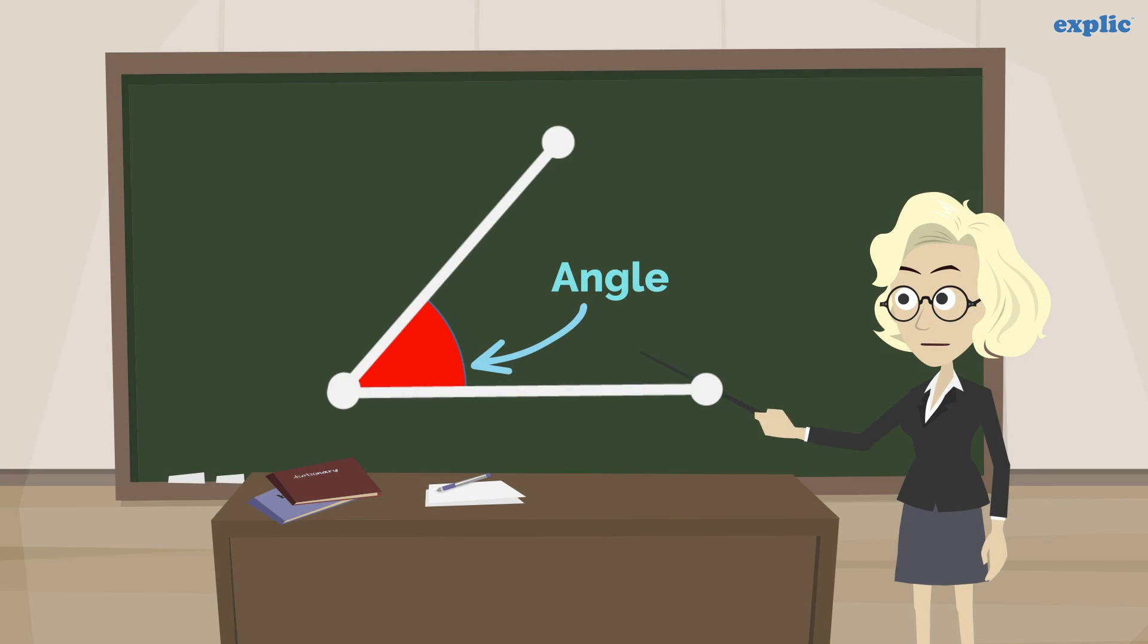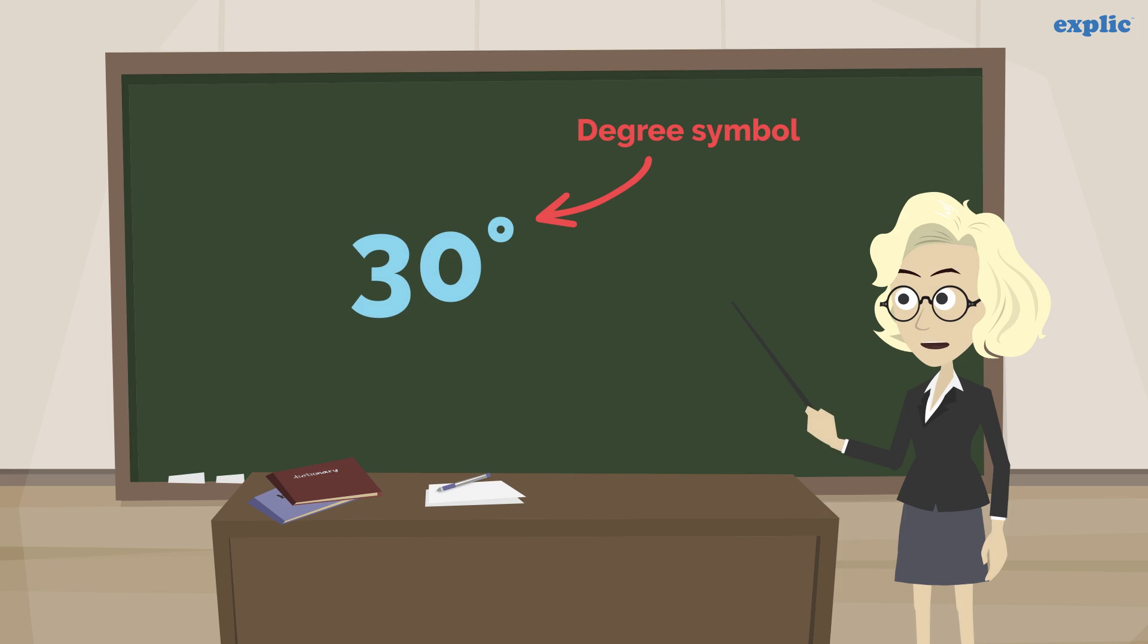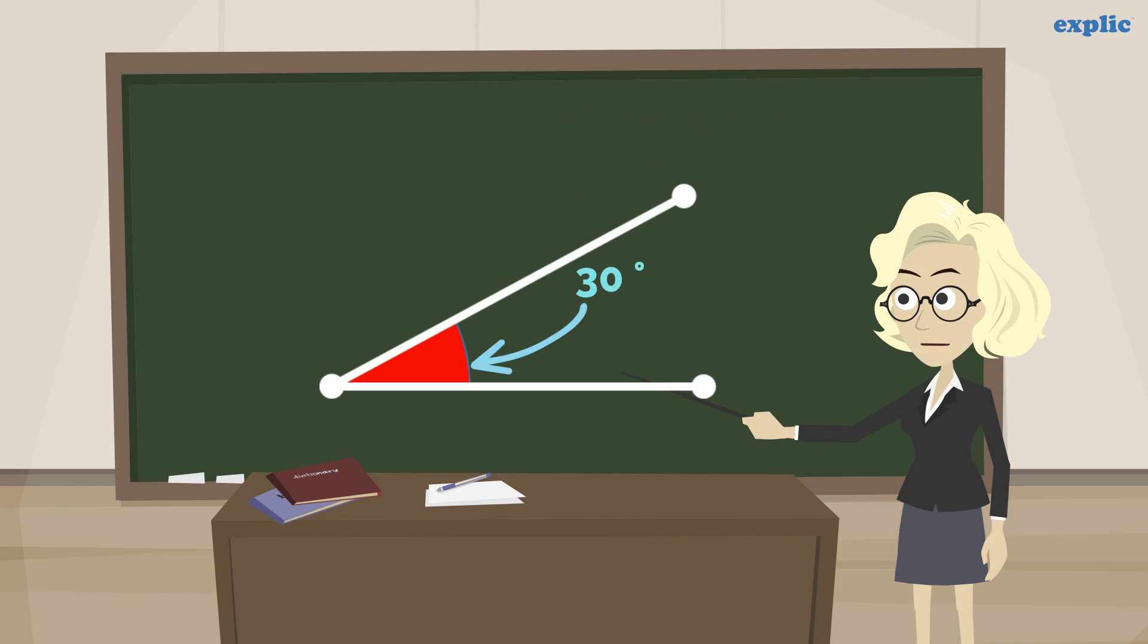As we know, an angle is formed when two lines meet at a point. An angle is measured in degrees. A degree is shown by a small circle symbol written on the top right of the angle measurement, such as 30 degrees and 60 degrees.